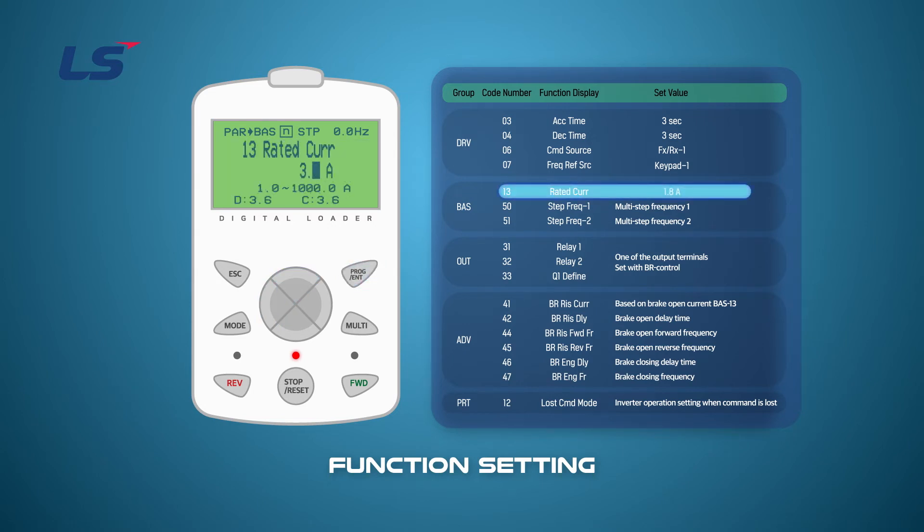Enter the rated current on the motor nameplate. Since the BR control is set based on the rated current of the motor, the correct value must be entered.